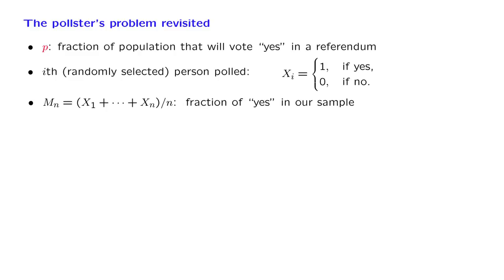Let us remind ourselves of the setting. We want to estimate a certain number p, which is the fraction of the population that will vote yes in a certain referendum. We estimate p by picking a sample of n people randomly, uniformly over the population, and independently. For each person in the sample, we ask them if they will vote yes or no and record their answers in Bernoulli random variables Xi. By the assumptions we have made, these Xi's are independent Bernoulli random variables, and their mean is equal to p.